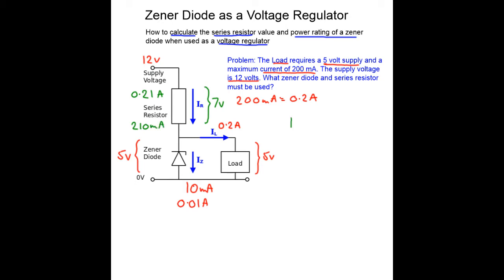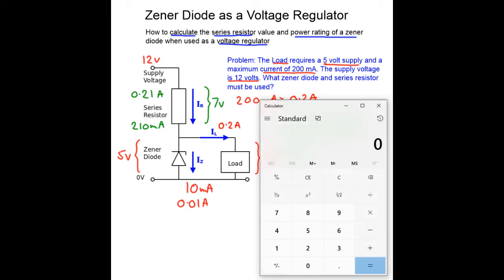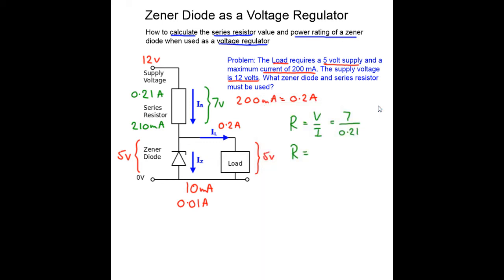So now we can use our resistor equation R equals V over I equals 7 divided by 0.21, so R equals 33 and a third ohms. So we will use 33 ohms. You want to go slightly smaller so you guarantee there's enough current for the Zener diode to work.